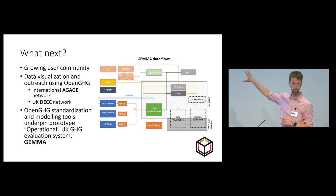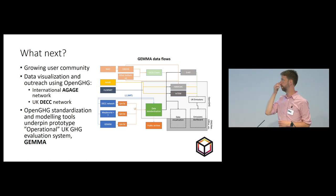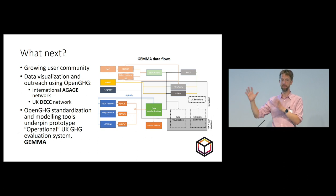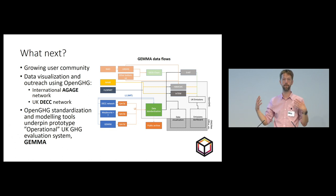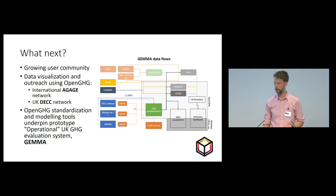This shows the data flow for the new operational system we're developing, with OpenGHG sitting at the core of it. We've got two years to prove the concept with all our partners, and hopefully if that's successful, the big picture vision is that this would become something analogous to the weather forecast — a greenhouse gas reporting system operating in near real time into the future. So that's where we are and where we're going.